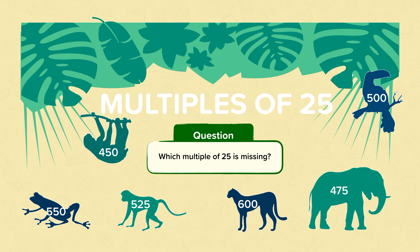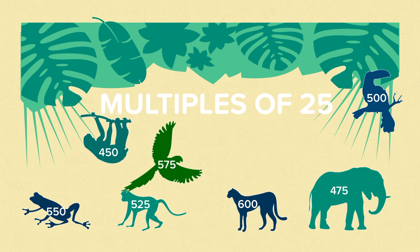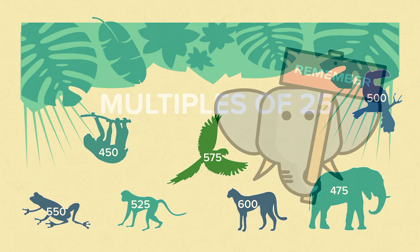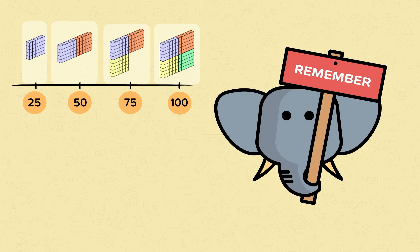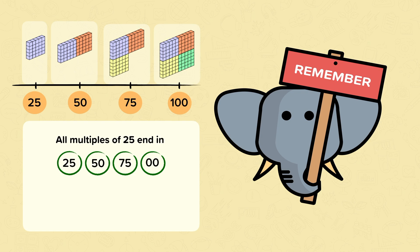Well done if you worked out that 575 was the missing multiple. Remember, when counting in multiples of 25, all multiples end in either 25, 50, 75, or 00.